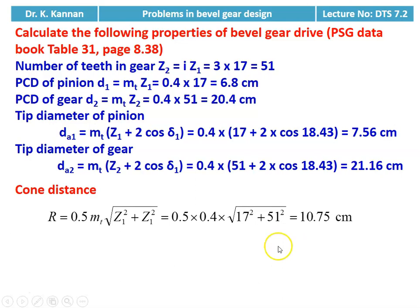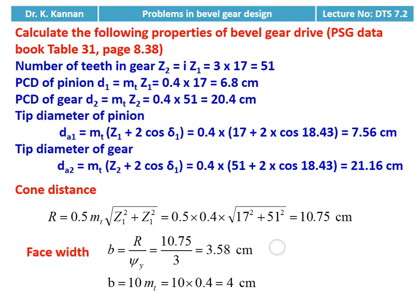We calculate the cone distance: R = 0.5 × mt × √(Z1² + Z2²) = 0.5 × 0.4 × √(17² + 51²) = 10.75 centimeter. This value is higher than the previous minimum of 7.07 centimeter; the actual cone distance is 10.75 centimeter. For face width, we have two equations: b = R / ψY = 10.75 / 3 = 3.58 centimeter, and b = 10 × mt = 10 × 0.4 = 4 centimeter. We fix b = 3.58 centimeter, the smaller value.